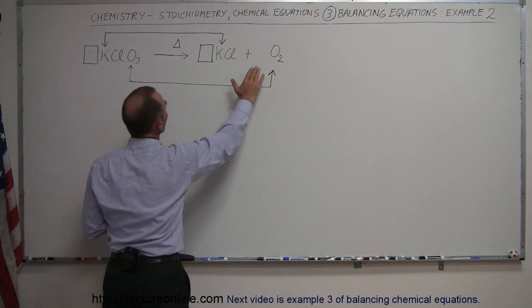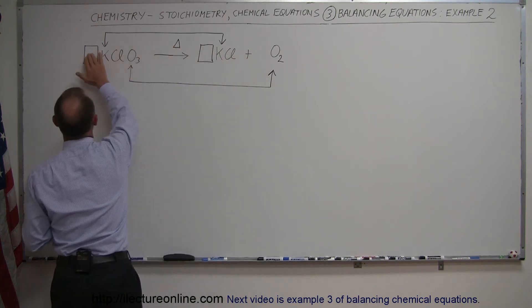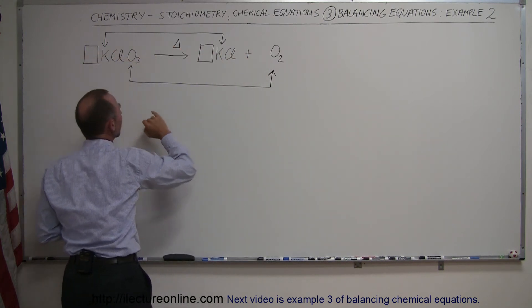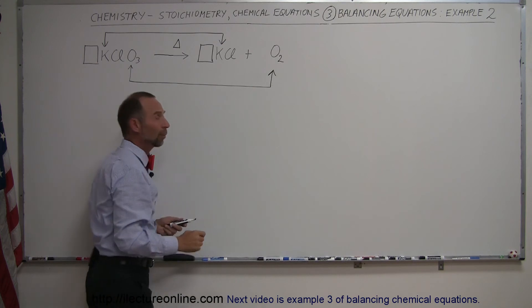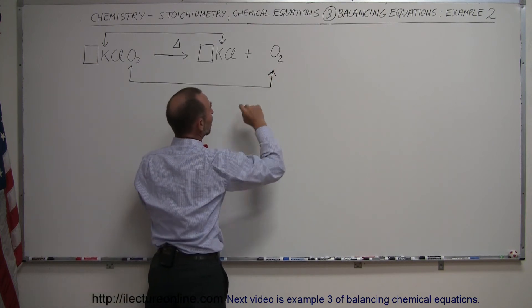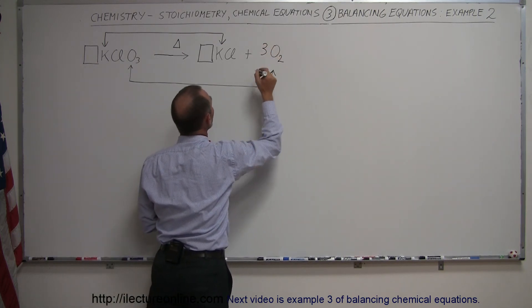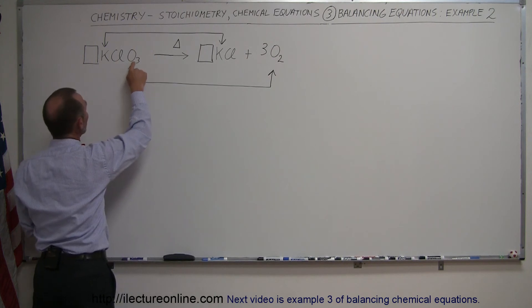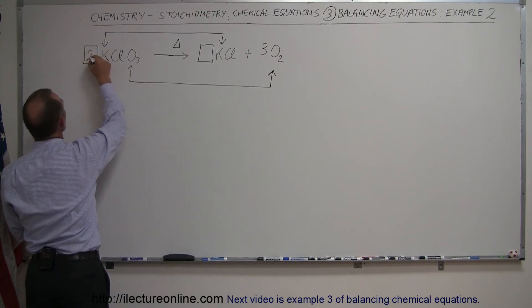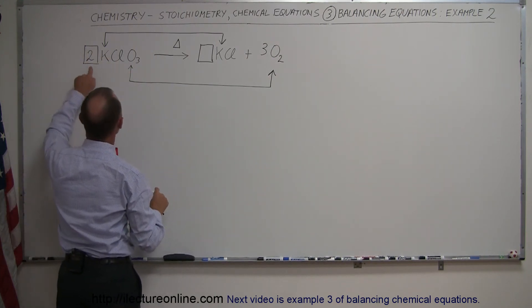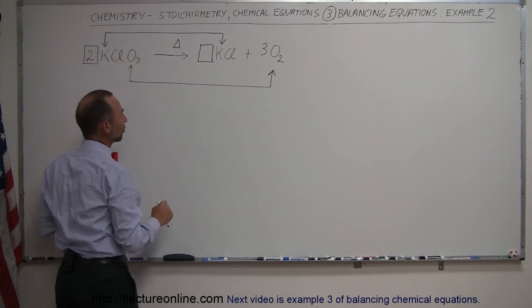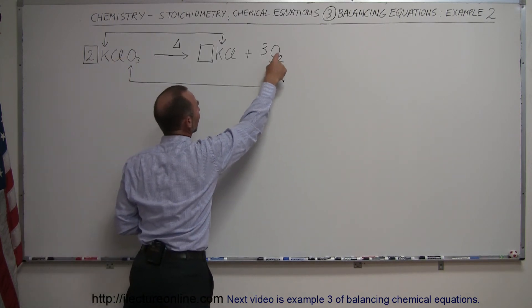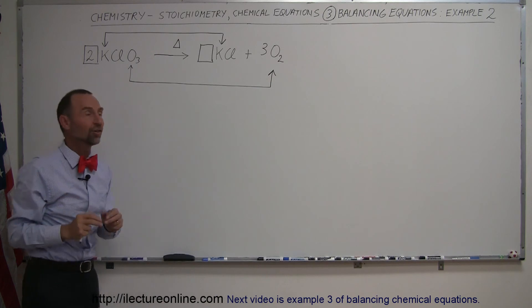So we'll have to put a number in front here and a number in front there that will end up with six oxygens here and six oxygens there. If I need six oxygens here, I'll need to put a three in front of it. And if I need six oxygens here, I will need to put a two in front of that. So now I know that two times three is six, I have six oxygens. And three times two is six, I have six oxygens. Now oxygen is balanced.